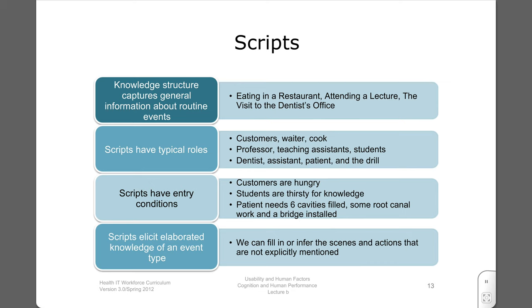Scripts are a kind of schema that captures general information about routine events, such as a trip to the dentist or eating in a fancy restaurant. They provide us with a set of expectations regarding the typical roles of people involved and the event sequence. We also recognize when such expectations are violated — for example, if you were asked to pay for your meal before ordering any food, or if your dentist sat in the dental chair and expected you to do an oral examination on him.